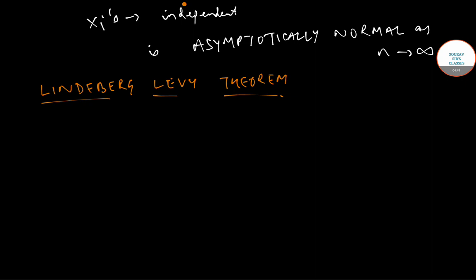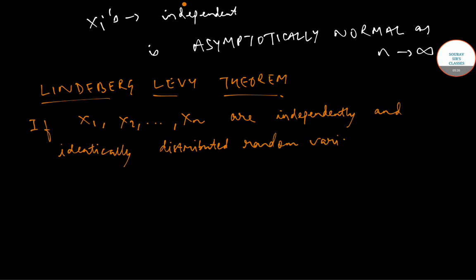This states that if x1, x2, and so on up to xn are independently and identically distributed random variables with expectation xi equals mu1 and variance xi equals sigma1 square, i goes from 1 up to n,